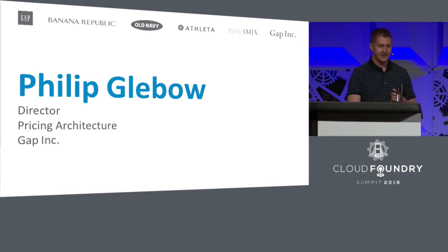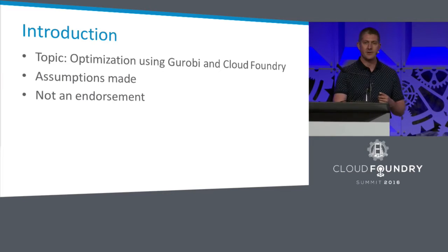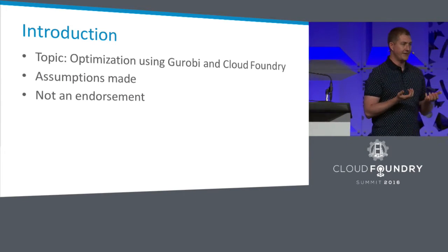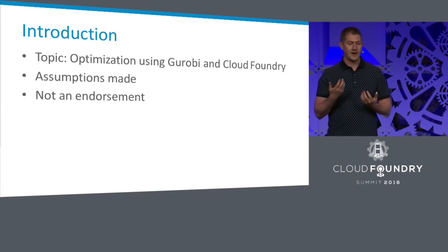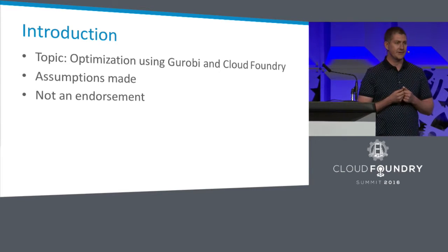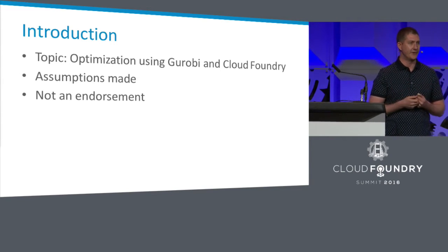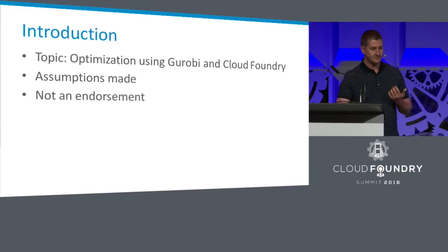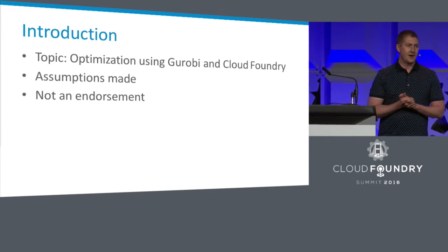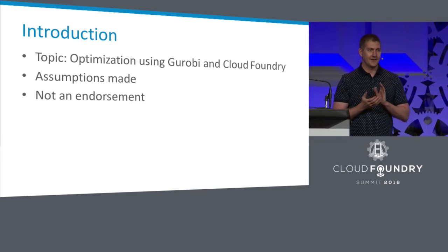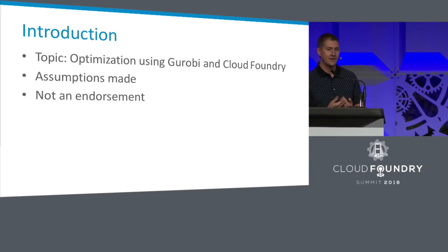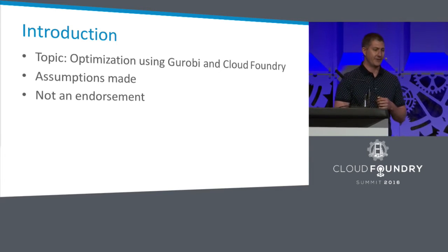Today I want to talk about how we've used something called Gurobi, which is a linear optimizer, integrated it with Cloud Foundry and also worked with Amazon to do this. It's a little bit of a technical talk — nuts and bolts — so I'm going to assume people are generally familiar with Cloud Foundry and Amazon. This is not an endorsement; that's our company policy. That said, I really appreciate the opportunity that Pivotal gave us to tell you about what we're doing with Cloud Foundry and Gurobi.